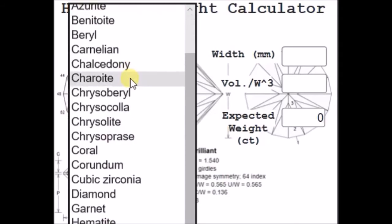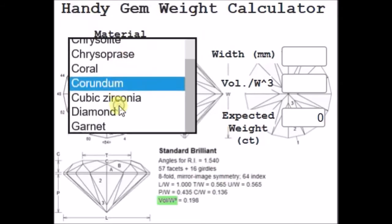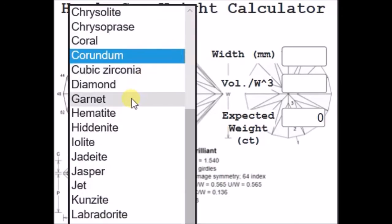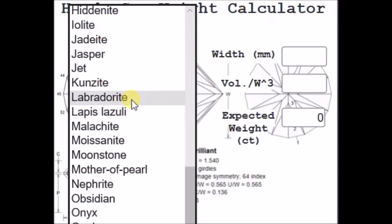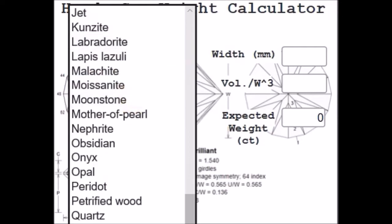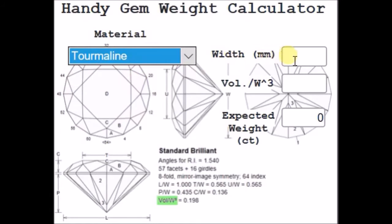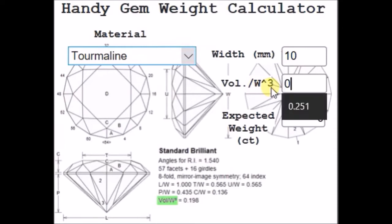For example, let's say that I got corundum... no, that cut we showed you is for tourmaline, so let's go tourmaline. We go with a width of maybe 10 mm. We punch in the volume on the width cubed, which was 0.224, and automatically you got the expected weight in carats, 3.472.